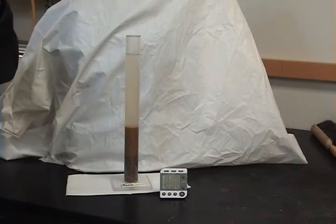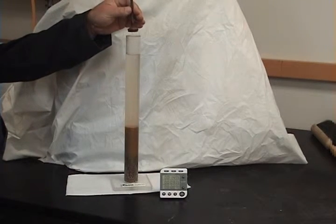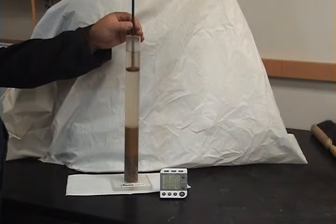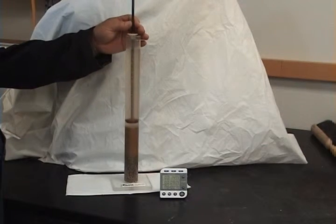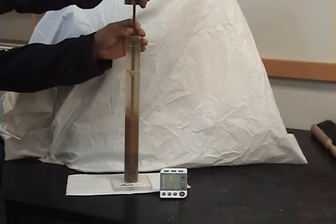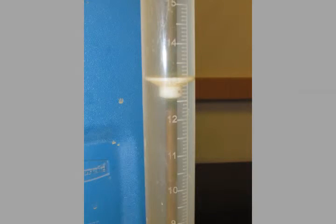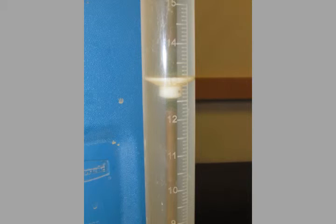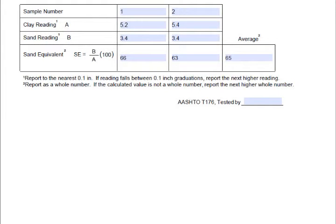Next, take the weighted foot assembly and carefully lower it into the cylinder to take the sand reading. Again, if the reading is in between two marks, round up to the next higher number and then subtract 10. The 10 represents the distance between the bottom of the weighted foot and the reading indicator. Repeat the process on the second sample. When completing the sand equivalent test calculations, round the results of each test to the next higher whole number, then average the two numbers and again round the average up to the next higher whole number.